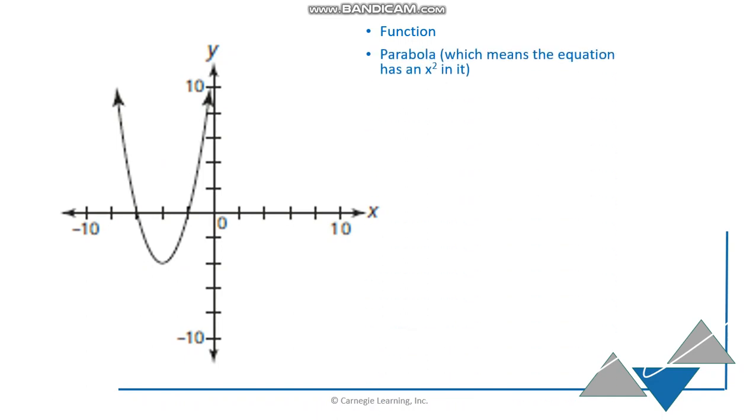It's a U shape and we call that a parabola. And that means the equation has an x squared in it someplace. It's continuous. It's not just a bunch of dots. It's some dots that we've plotted, but we've connected all of them. So that makes it a continuous function.